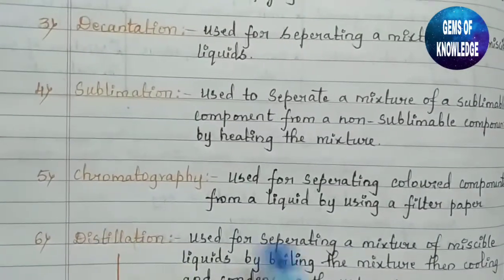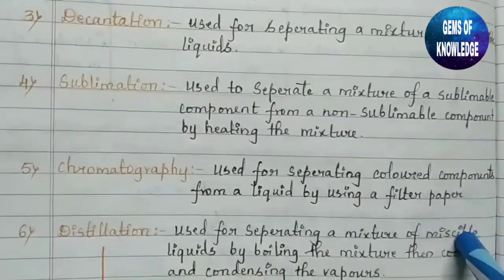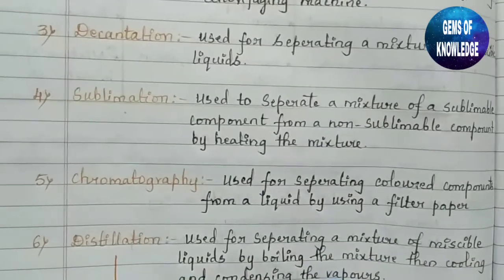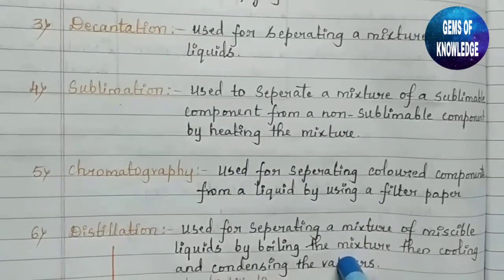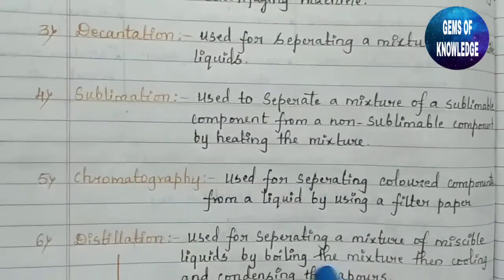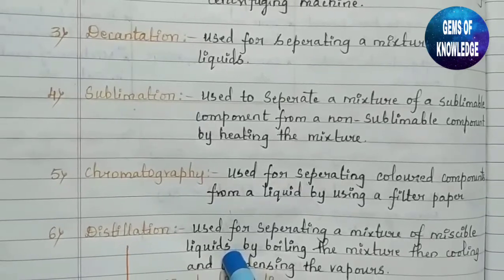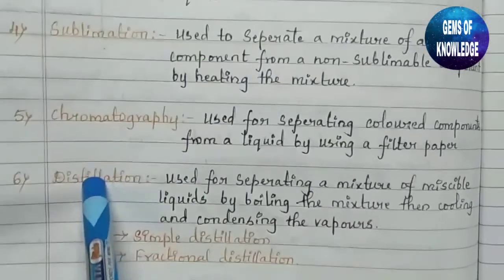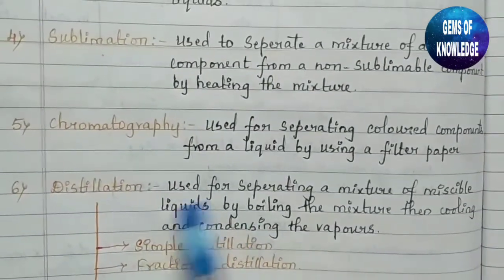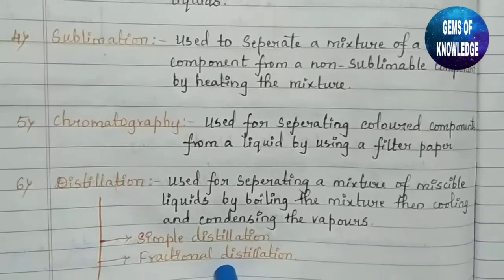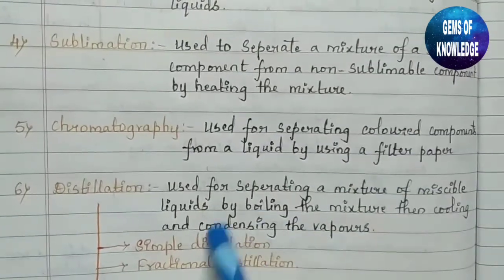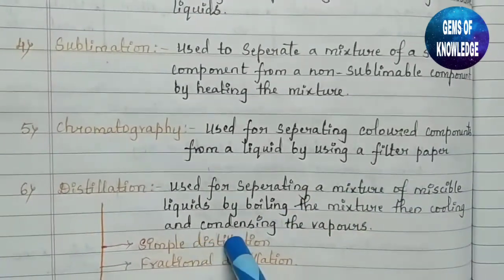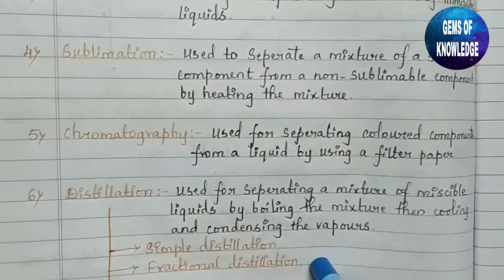Distillation is used for separating a mixture of miscible liquids by boiling the mixture, then cooling and condensing the vapors. Two miscible liquids are used — one has a lower boiling point and the other a higher boiling point. There are two techniques: simple distillation and fractional distillation, both used to separate miscible liquids.